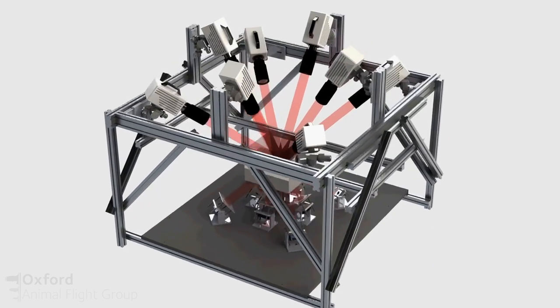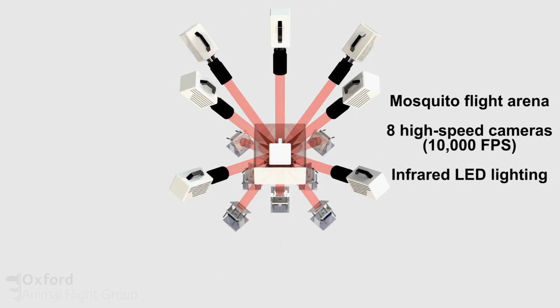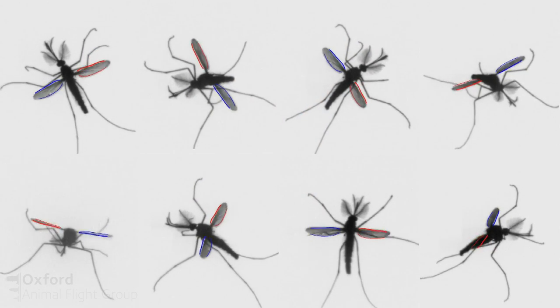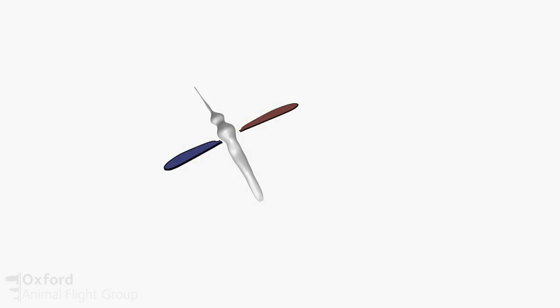So we used eight high-speed cameras to record mosquitoes flying freely around a chamber at 10,000 frames a second. And from there we were able to extract out the three-dimensional wing movements that they use.